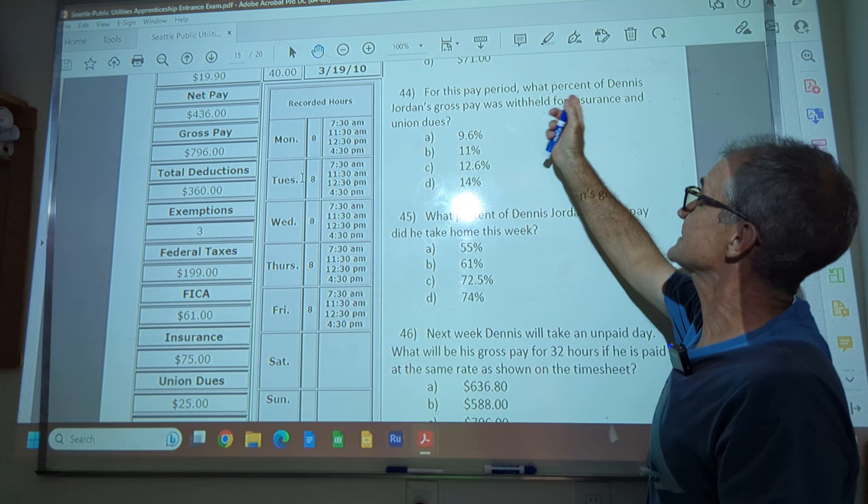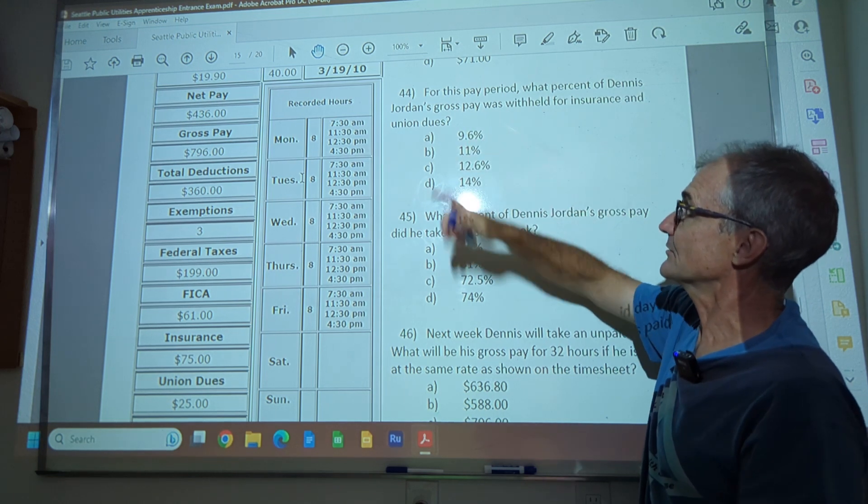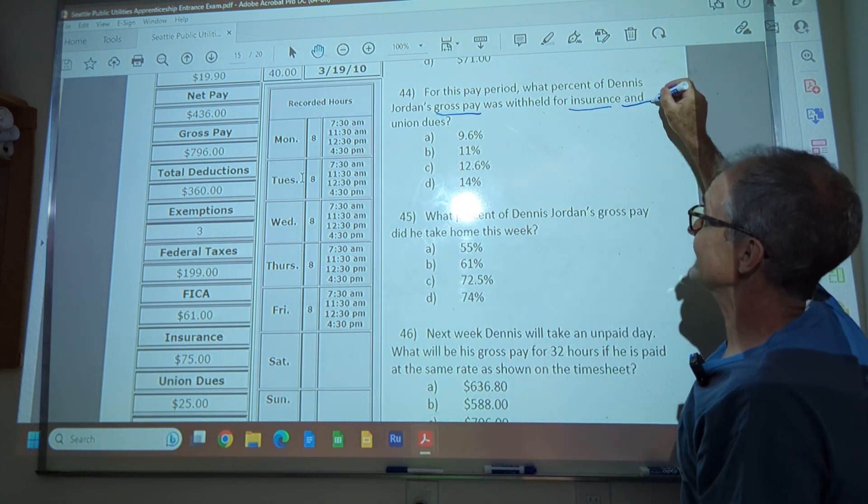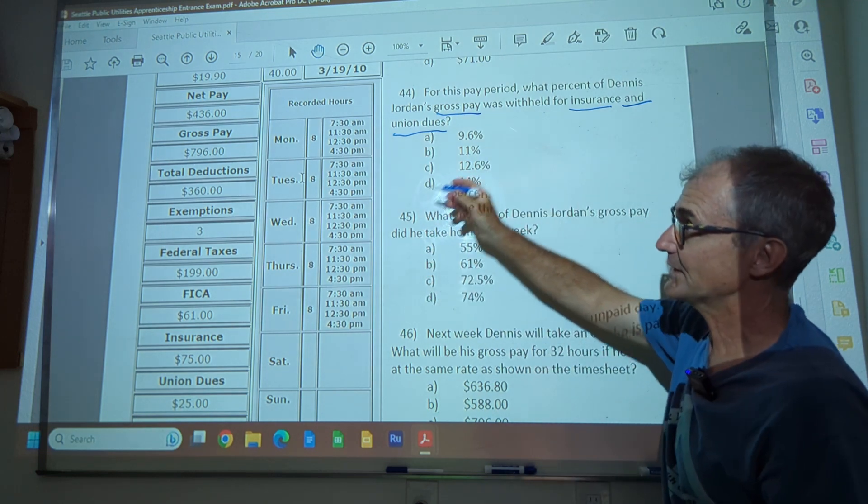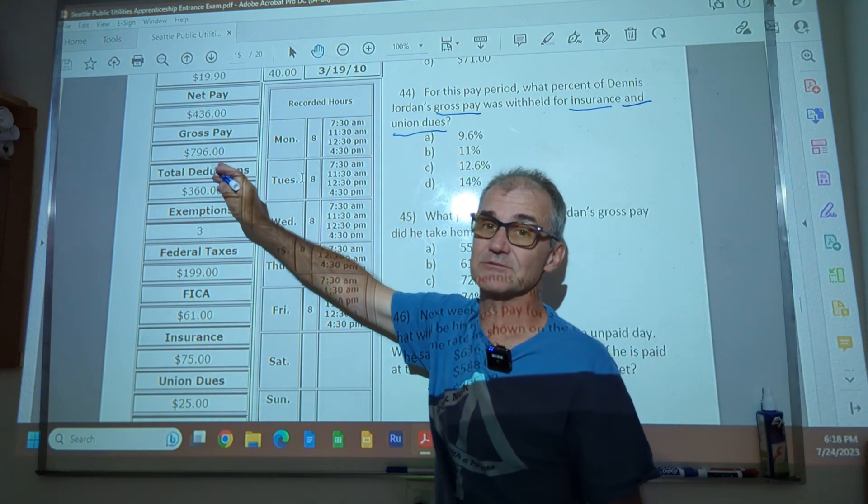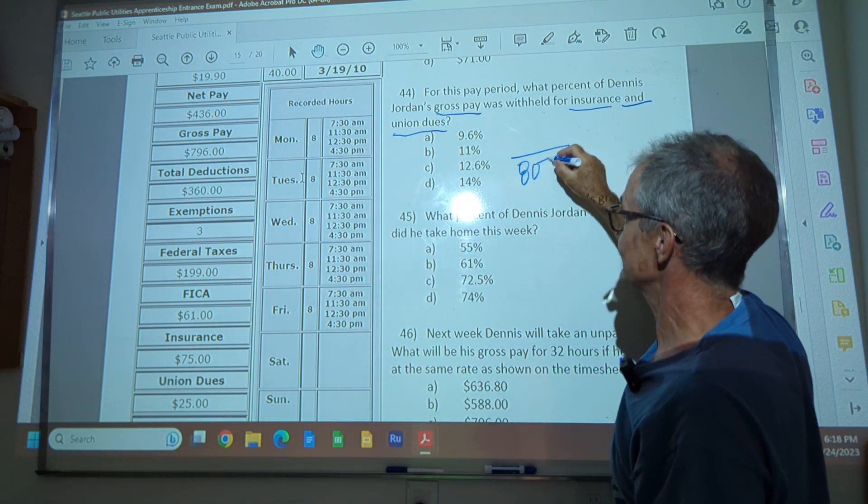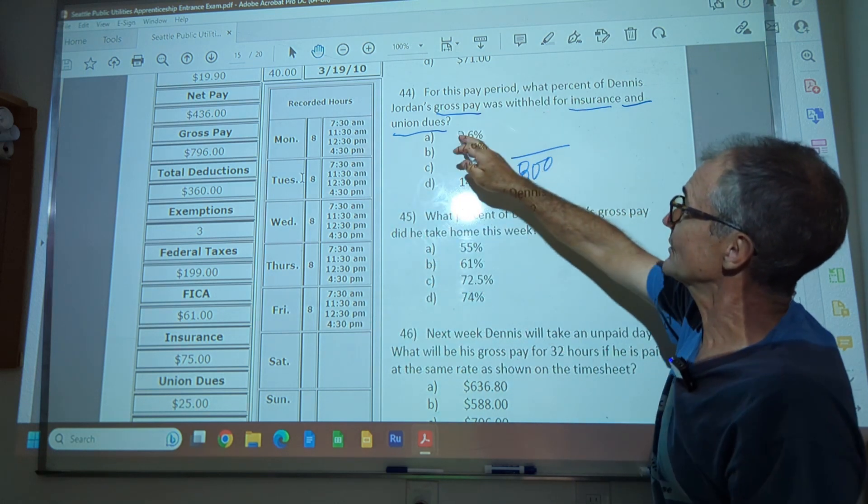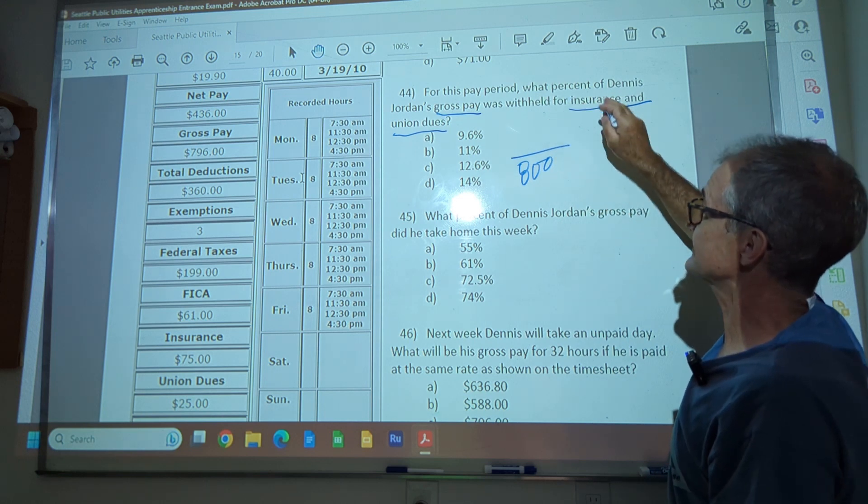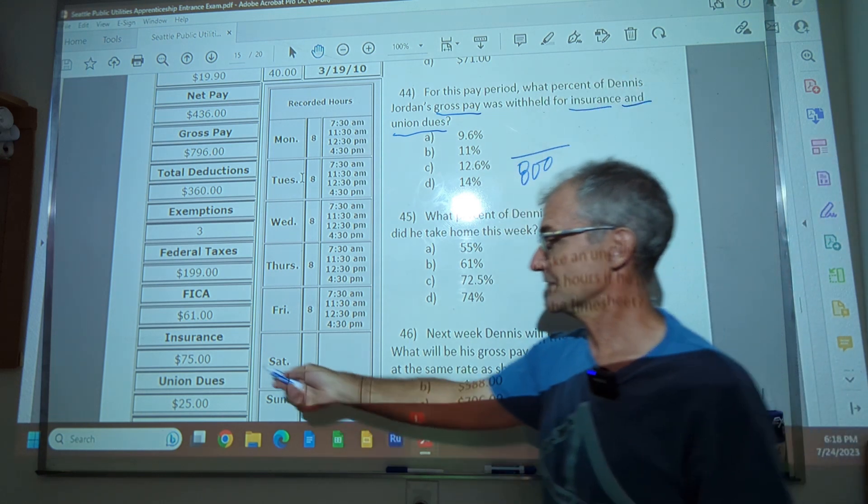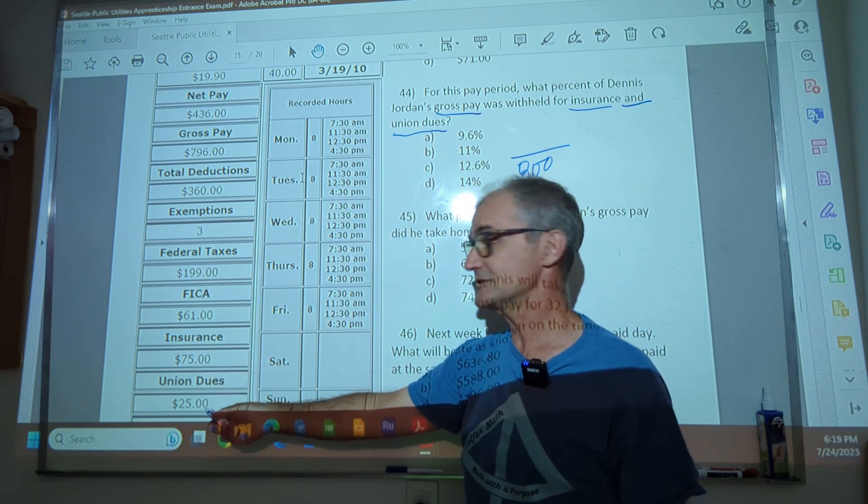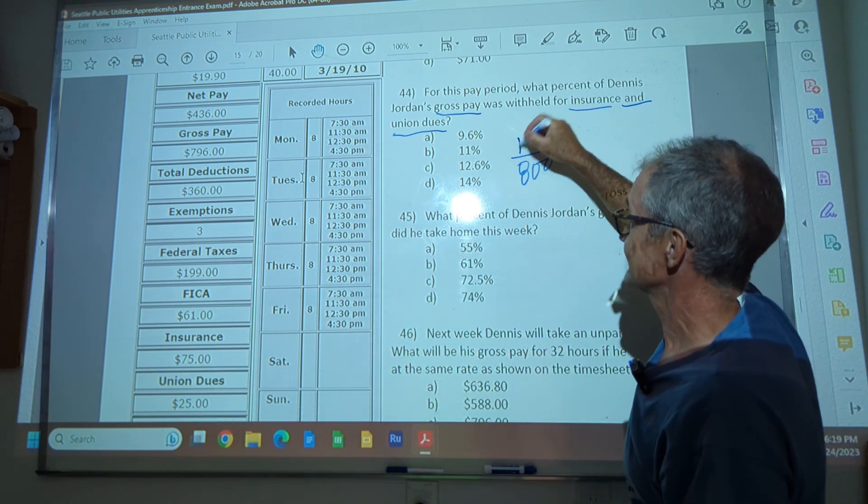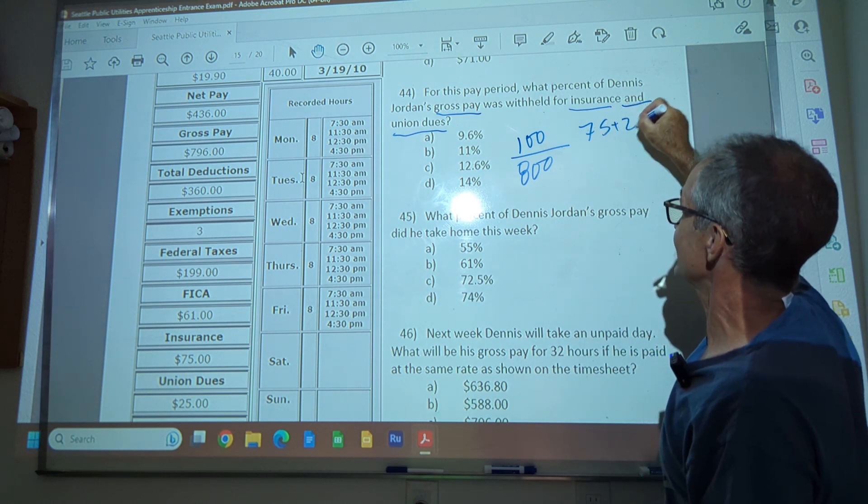For this pay period, what percent of Dennis Jordan's gross pay, gross pay. So that's going to be the bottom of our denominator was withheld for insurance and union dues. So the gross pay I go up here, I'm going to round that up to $800. It's pretty close to 800. I'm going to round that up. It's a total amount he makes is the gross pay. Net pay is how much he takes home. But it says what percent of the gross pay was withheld for insurance and union dues. Insurance down here is 75. Union dues right here are 25.